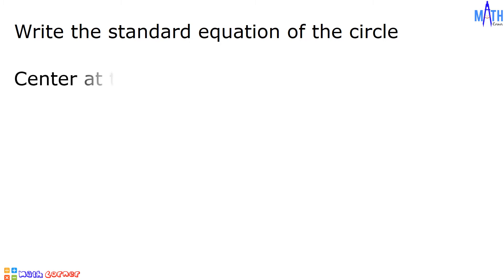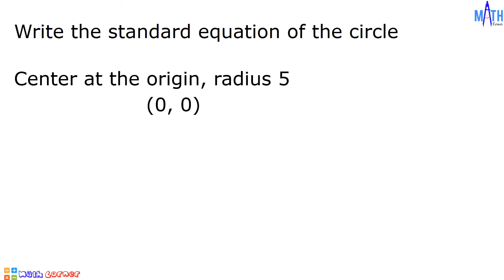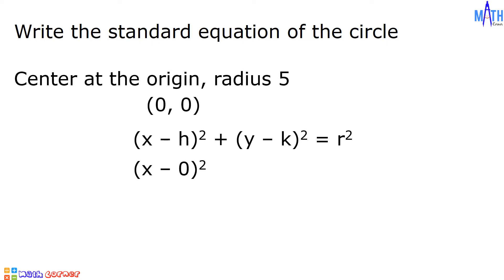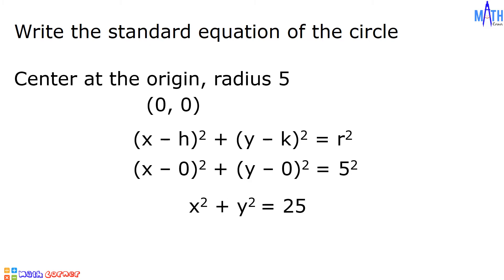Example number 2: centered at the origin, radius is 5. The origin has coordinates (0, 0), so the value of h is equal to 0 and the value of k is equal to 0. (x minus h) squared becomes (x minus 0) squared, plus (y minus k) squared becomes (y minus 0) squared, equals r squared, which becomes 5 squared. Since x minus 0 equals x, y minus 0 equals y, and 5 squared equals 25, we have x squared plus y squared equals 25.